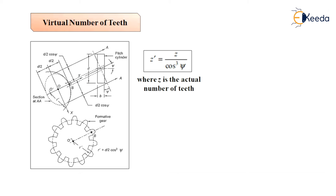The pitch circle diameter d' of the virtual gear is given by d' is equal to 2r', which is equal to d upon cos squared psi.